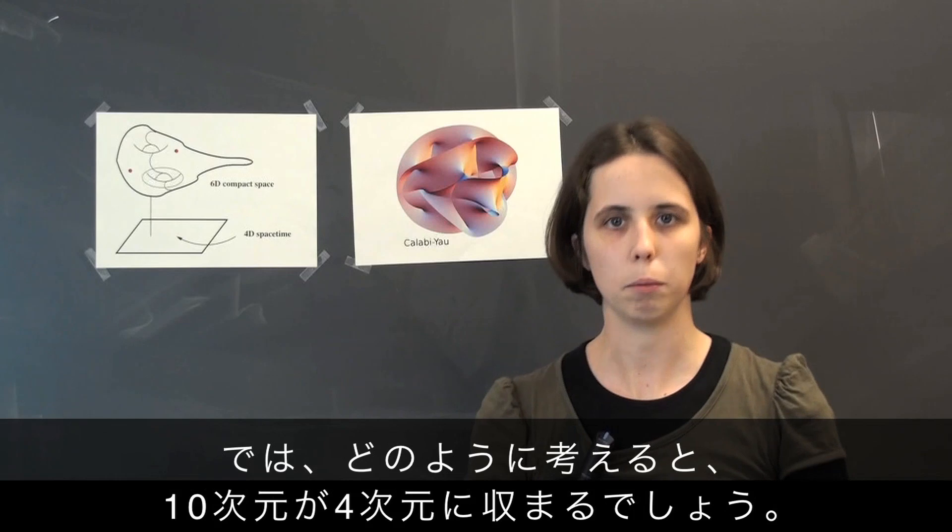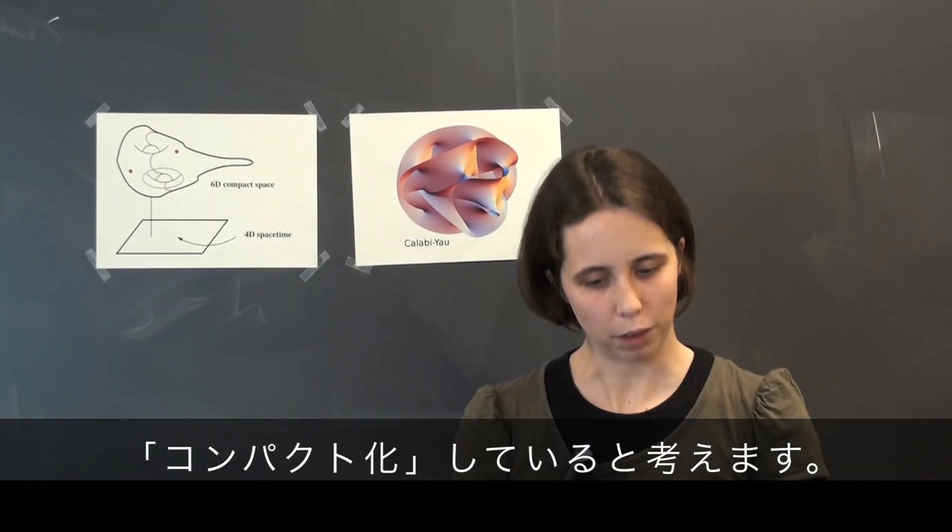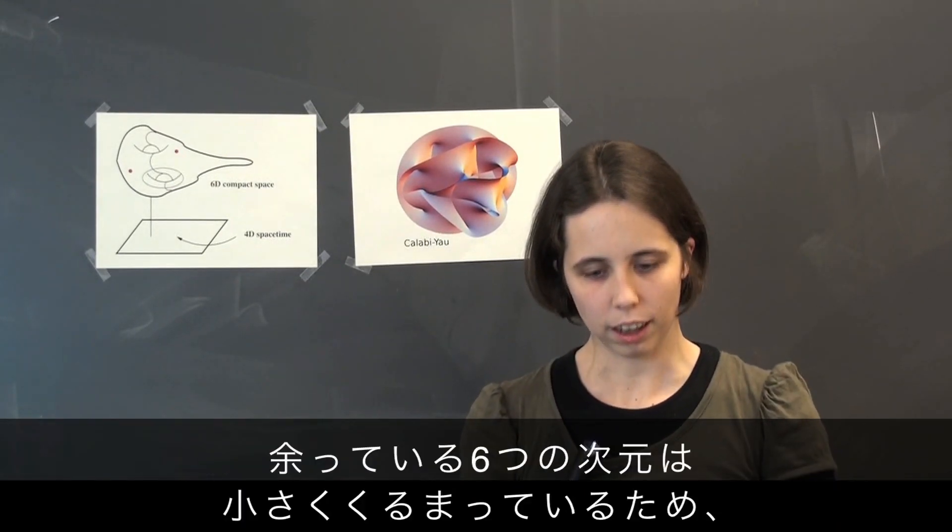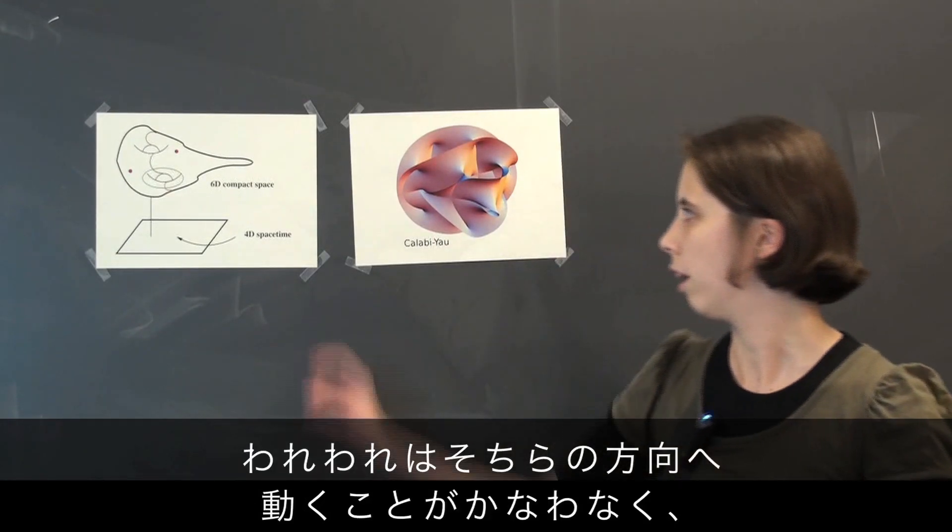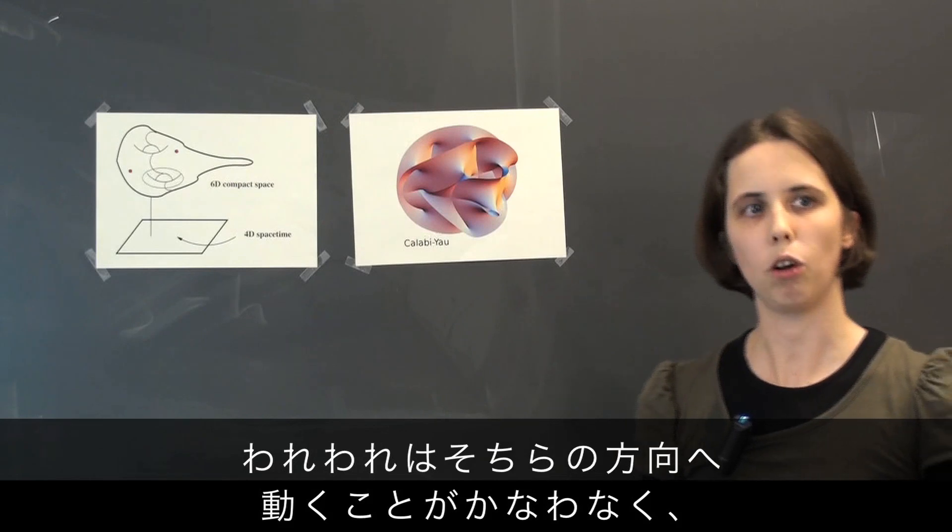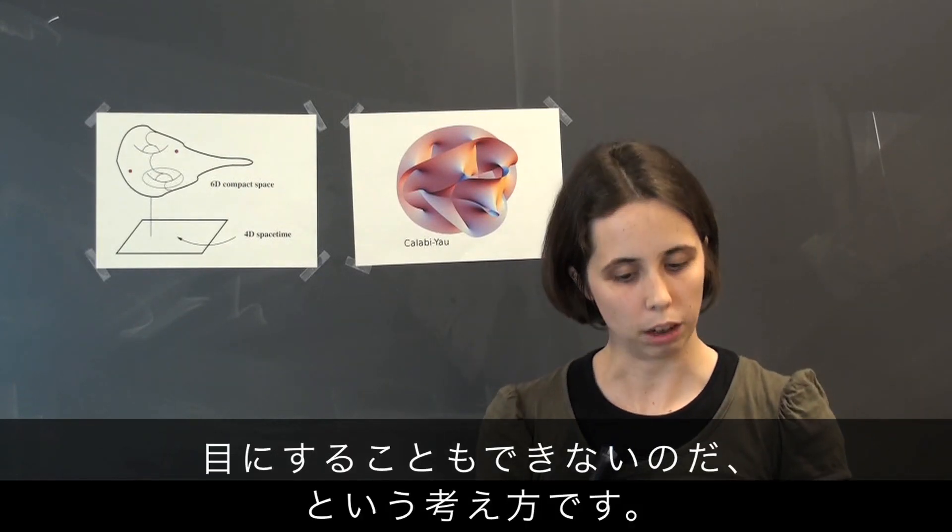So how do we get from 10 dimensions down to 4 dimensions? The answer is called compactification. And the idea is that the 6 extra dimensions are actually small and wrapped up so that we cannot move in them and also that we cannot see them.